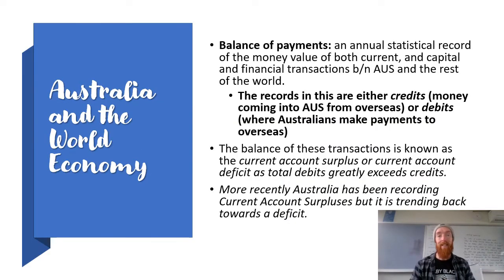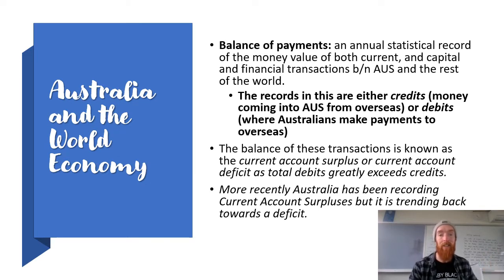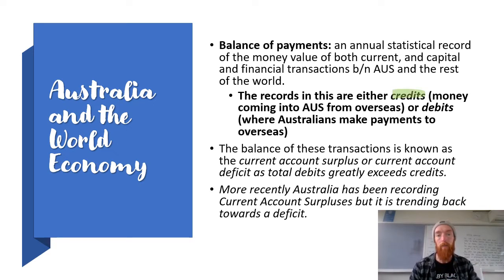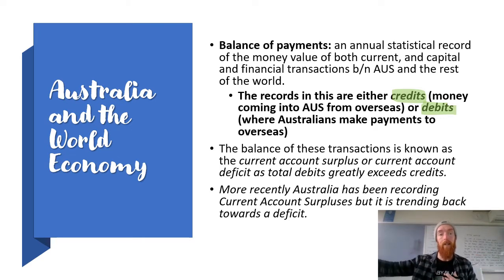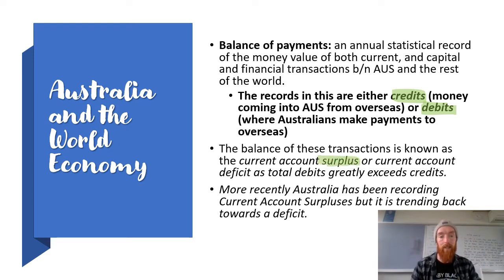The balance of payments is an annual statistical record of the money value of both current and capital and financial transactions between Australia and the rest of the world. It records credits — money coming into Australia from overseas — and debits — where Australians make payments to overseas. All we care about is the amount of credits coming in versus debits going out, and the balance of these transactions is known as either a current account surplus or a current account deficit.